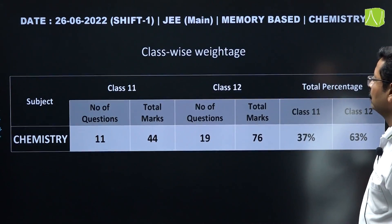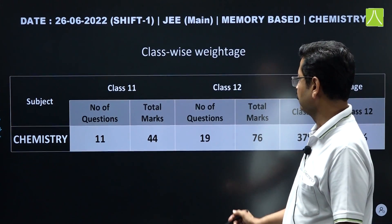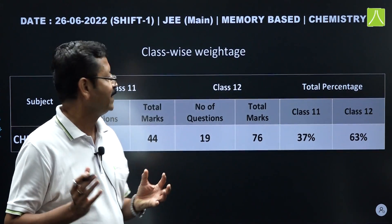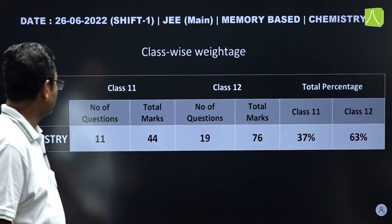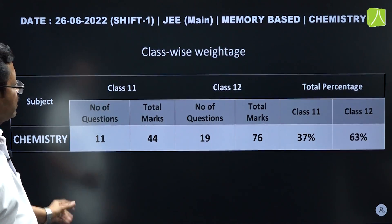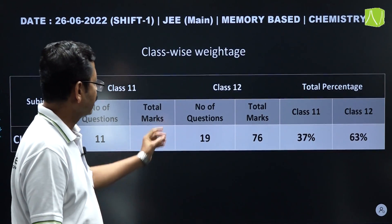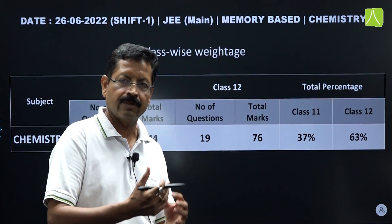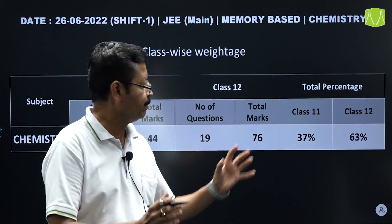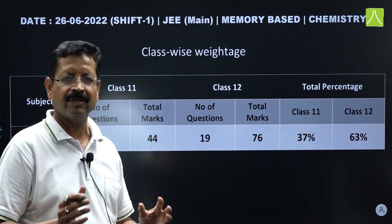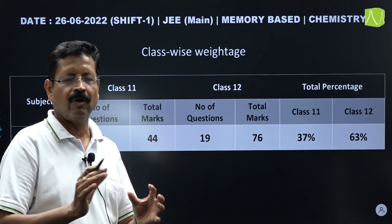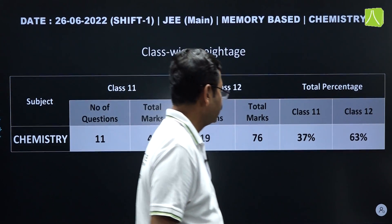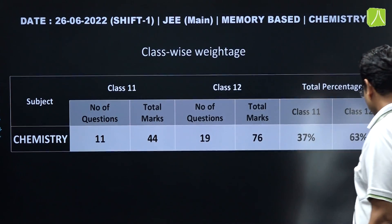From these memory-based questions, we found 11 questions from Class 11th and 19 questions from Class 12th. So Class 12 had a higher percentage, around 63%, whereas it is generally around 60:40 — so this paper is slightly inclined towards Class 12.